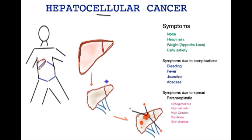Liver cirrhosis predisposes to the development of cancer. You can see a normal liver becoming cirrhotic or fibrotic, and finally cancer arising. It starts as a small nodule which gradually gets bigger, and it may spread to other parts of the liver as well as outside of the liver.